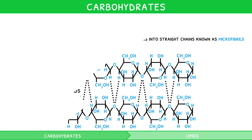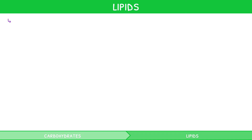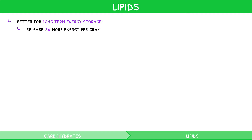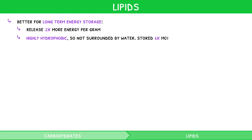Carbohydrates are a great source of energy. However, lipids, i.e. fats, are better for long-term energy storage, because they release two times more energy per gram than carbohydrates. They are highly hydrophobic, so are not surrounded by water. As a result, they are stored six times more efficiently than carbohydrates.